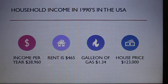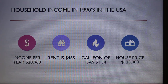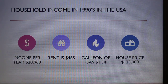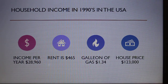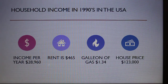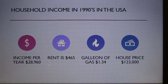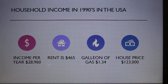Now looking at the 1990s, the average household income — with one person working — was about $28,960, and this could double if more than one person was working. Rent was $465 per month, and a gallon of gas was $1.34. We can see that gas prices haven't changed significantly from the previous period — it was $1.04 before, and now $1.34 — so that's fairly marginal.